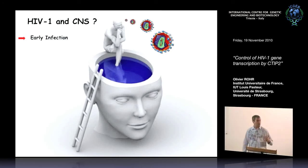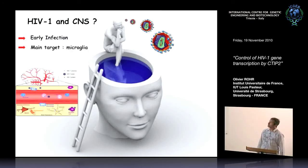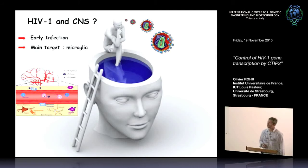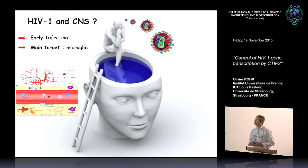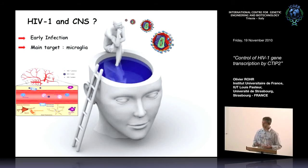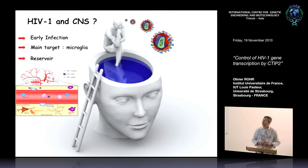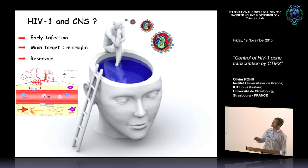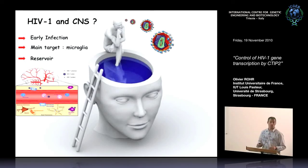Why study microglial cells? Because these resident macrophages are the main target for the virus in the CNS, and they have been described in the MACAC model as a potent reservoir for the virus. Furthermore, due to the blood-brain barrier, the CNS constitutes a sanctuary for this reservoir with respect to current therapy.